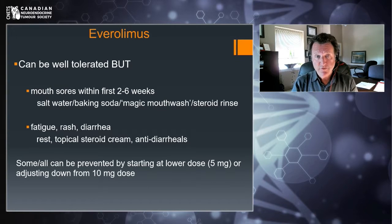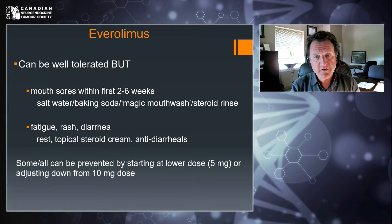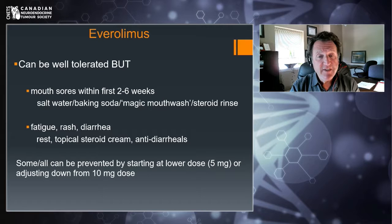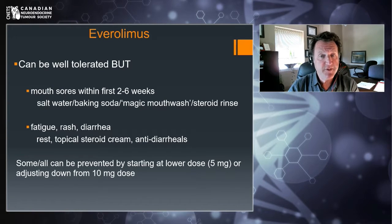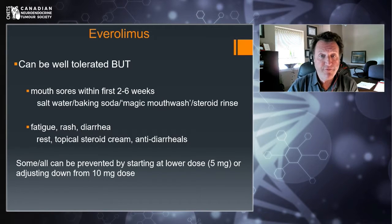Everolimus or Afinitor can be well tolerated, but mouth sores can be an issue, usually within the first two to six weeks. Remedies include saltwater rinses, baking soda rinses, and what we call magic mouthwashes — not so magical, but they can help some patients. In worst case scenarios, a steroid rinse can help. Fatigue, rash, and diarrhea can also be problems. Resting with fatigue is important; low-dose topical steroid creams can help with the rash; and Imodium can help with diarrhea. When you combine all these side effects, even if low grade, they can really interfere with quality of life. Many can be prevented by starting at a lower dose — five milligrams rather than ten — then re-escalating if tolerance is excellent.